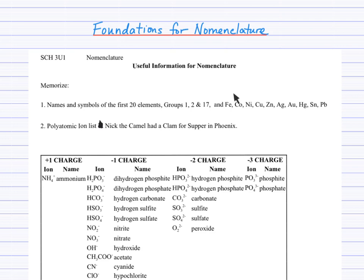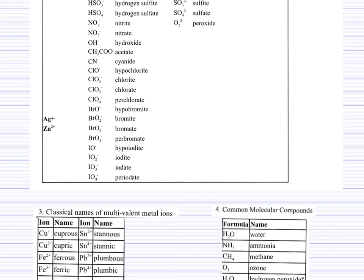Okay, in number two here I have a large table. This is the polyatomic ion list. 'Nick the camel had a clam for supper in Phoenix' is a little memorization trick that we have to learn a bunch of these names and formulas. I'll teach 'Nick the camel' in a separate video, so for now keep this table for reference in your notebook.